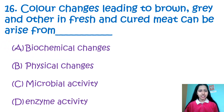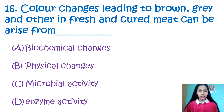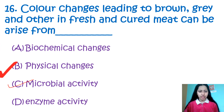Question number 16: Color changes leading to brown, grey and other in fresh and cured meat can arise from biochemical changes, physical changes, microbial activities, or enzymatic activity. These color changes are due to microbial activity — that is option number C.